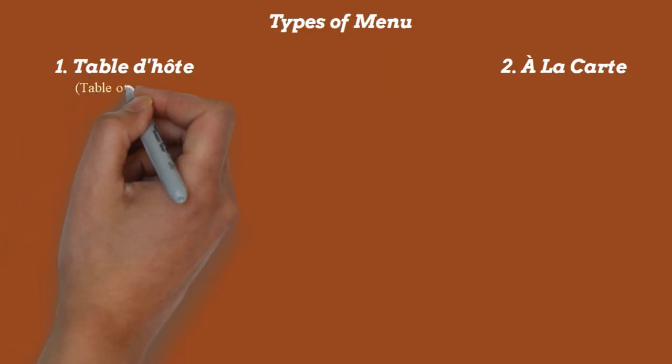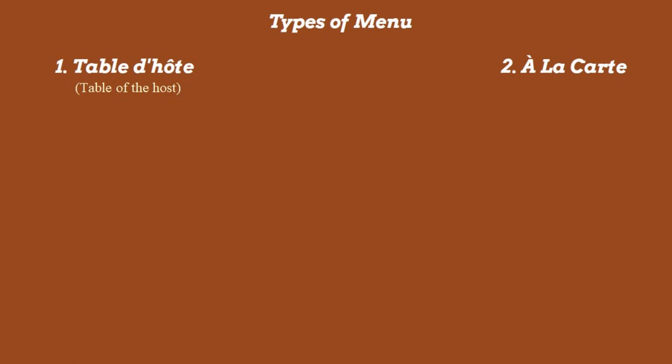The table d'hôte is a fixed menu at a fixed price. Literally meaning 'table of the host,' when you go to a table d'hôte restaurant you do not have many choices — you are only offered what the chef or owner has prepared for that particular day. You cannot make your own choices; you go by the chef's selection for that day. That entire menu is offered at a fixed price.